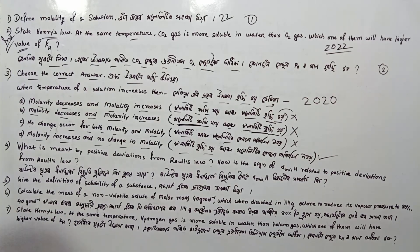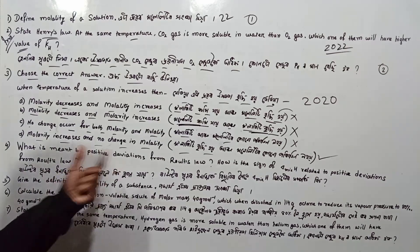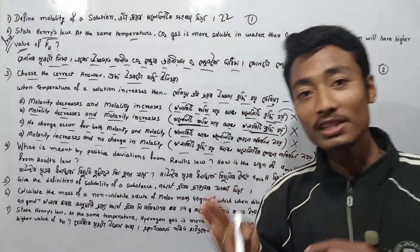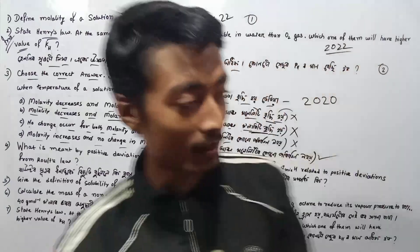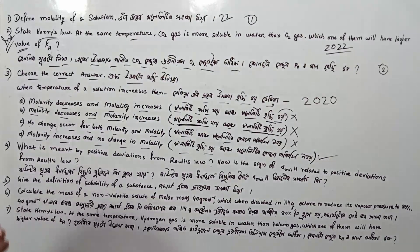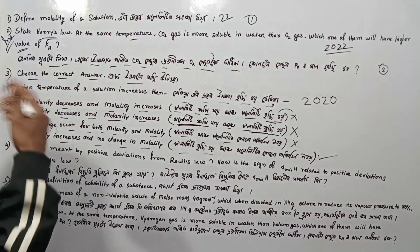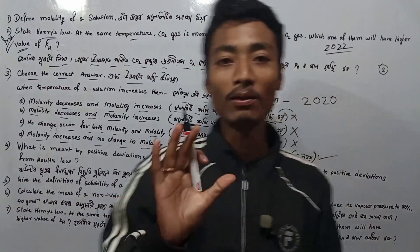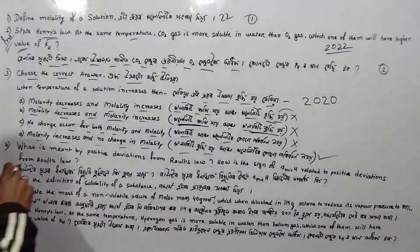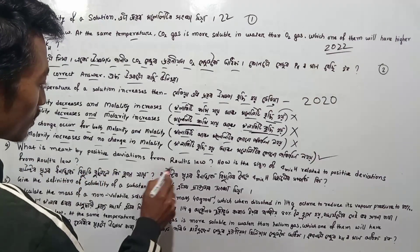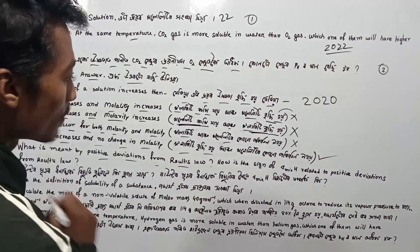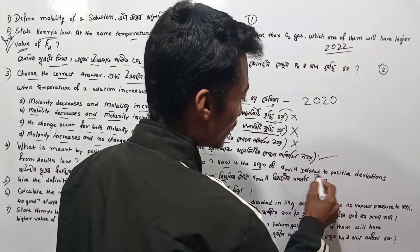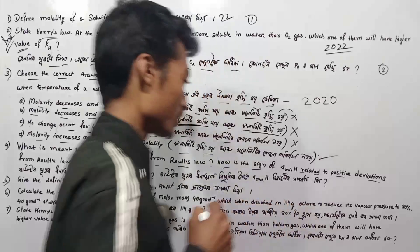Next question: What is meant by positive deviation? This is an important topic that we have discussed — positive deviation and negative deviation. Next question: What is meant by positive deviations from Raoult's law? How is the sign of delta mix H related to positive deviations from Raoult's law?